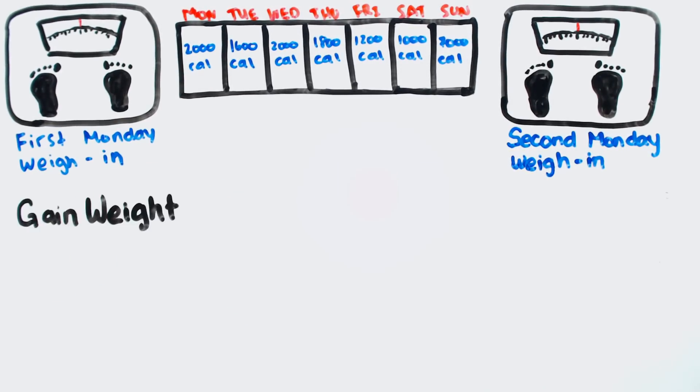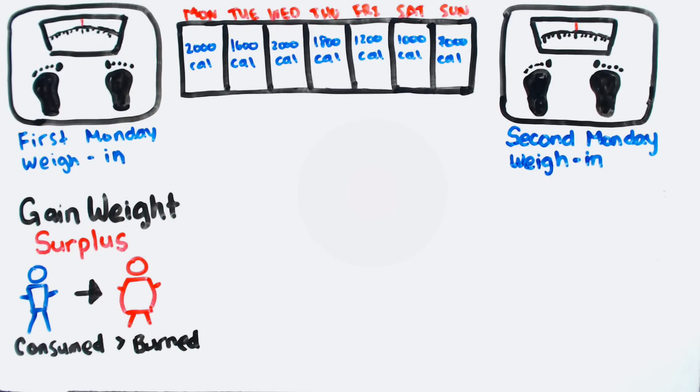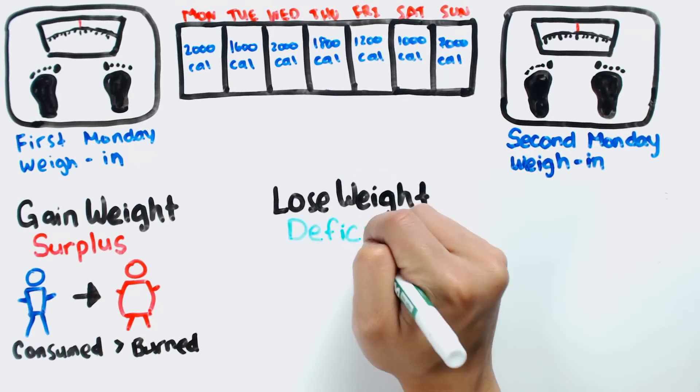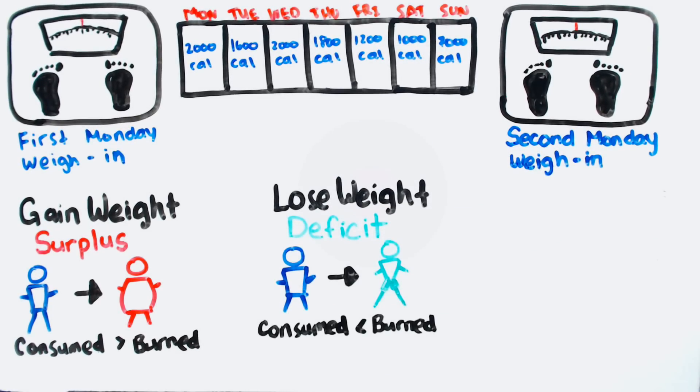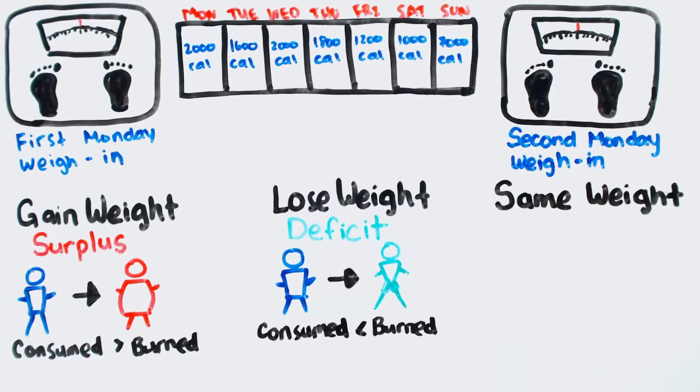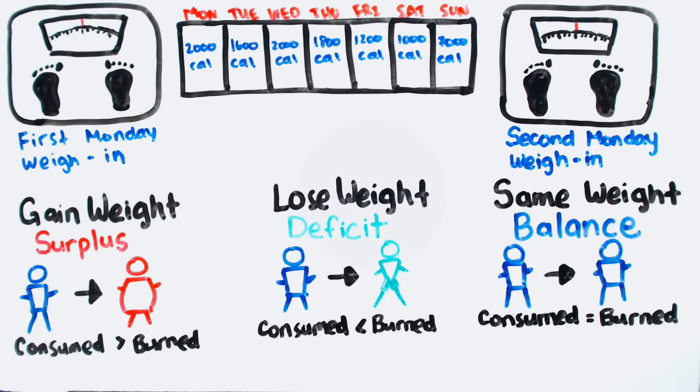If you gained weight, you know you're eating at a surplus, meaning you're taking in more calories than you burn. If you lose weight, you know you're eating at a deficit, meaning you're taking in fewer calories than you burn. If your weight didn't change at all, you are at an energy balance, meaning you ate as many calories as you burned.